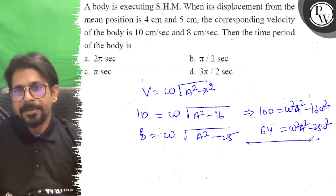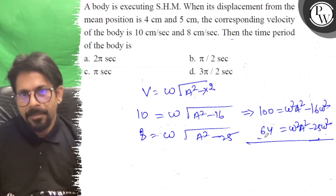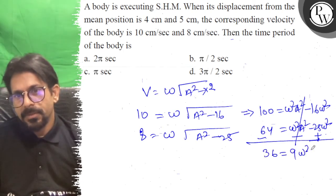If we subtract these equations, the A squared terms cancel out. Subtracting gives us 36 equals 9 omega squared.